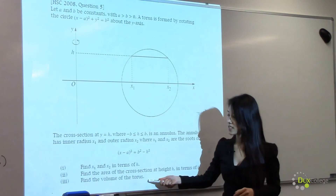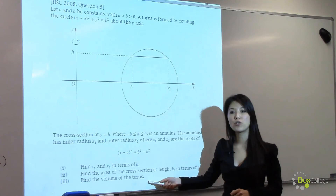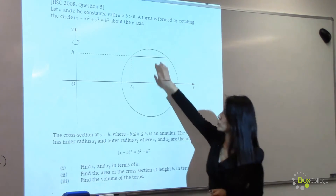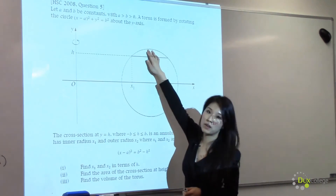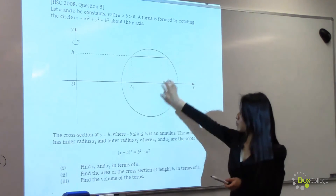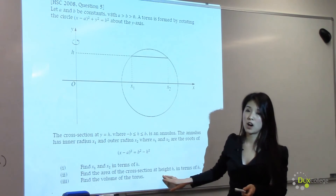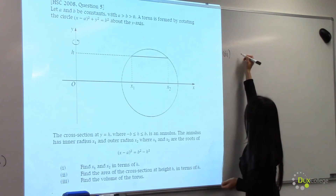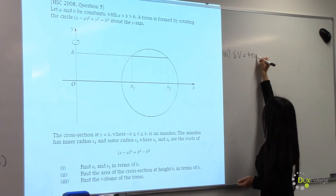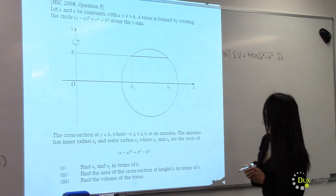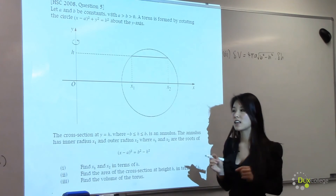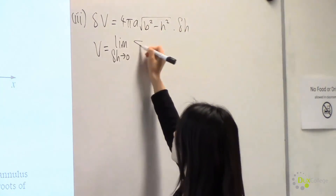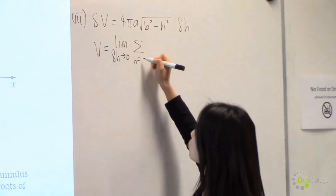Now we are up to part 3, which requires us to find the volume of the torus. The volume can be found by summing up all of these thin slices from the bottom all the way up to the top. The area of the cross-section found in part 2, multiplied by delta h, gives us the volume of one very thin slice.